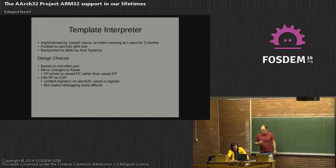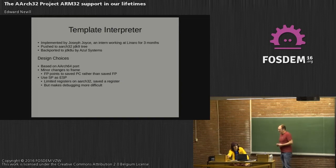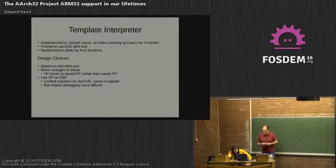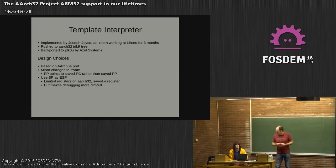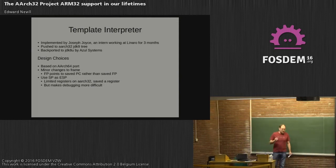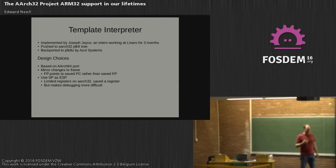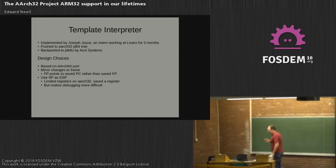There are a number of design choices Joseph made, based on the ARCH64 project, trying to minimise changes as much as possible. He made some changes to the frame structure — instead of having the frame pointer point to itself, he had it point to the PC. This was apparently an attempt to get GDB to unwind the frames correctly, but sadly it didn't work. We might actually reverse that change.